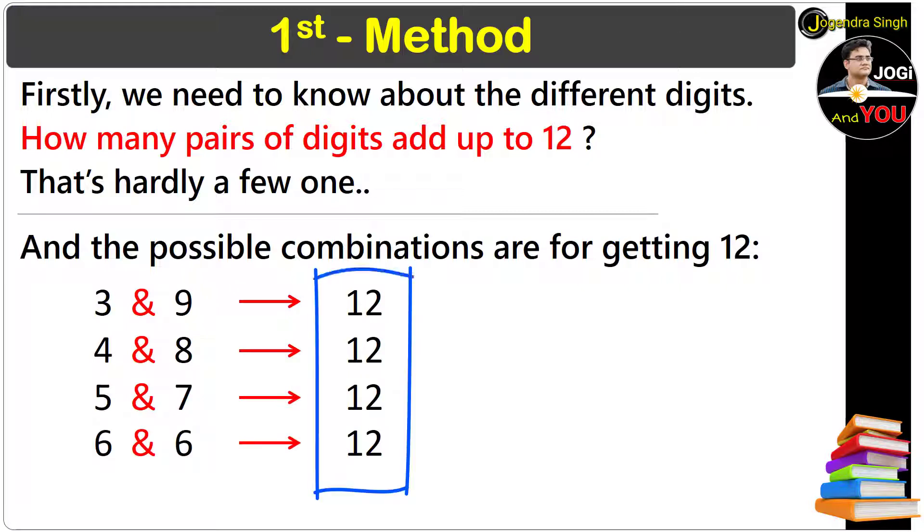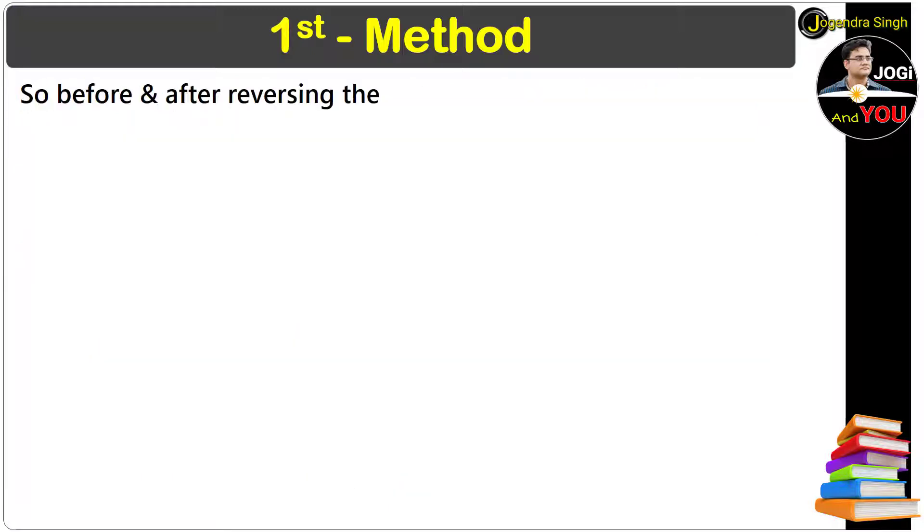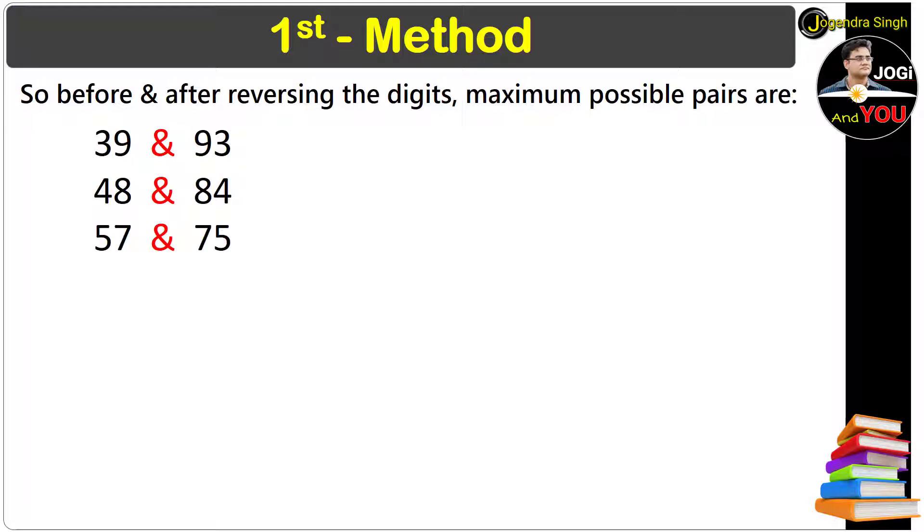It's a very common pattern. So before and after reversing the digits, maximum possible pairs are 39 and 93, 48 and 84, 57 and 75, 66 and 66.